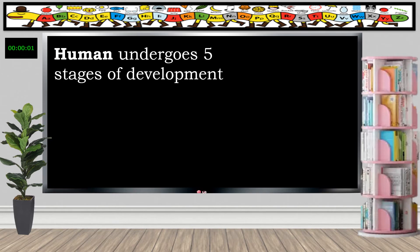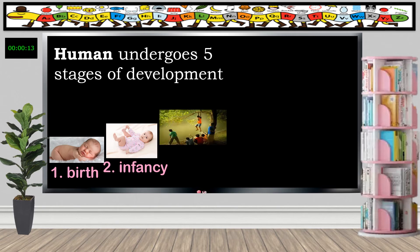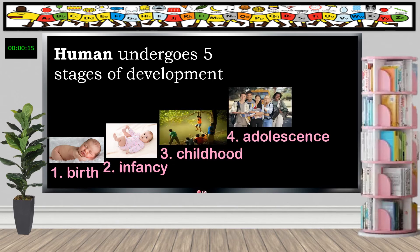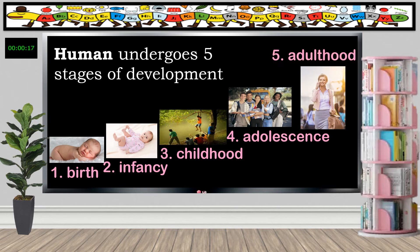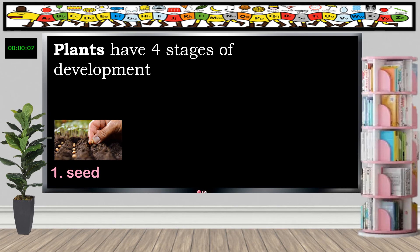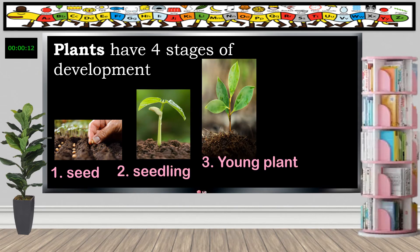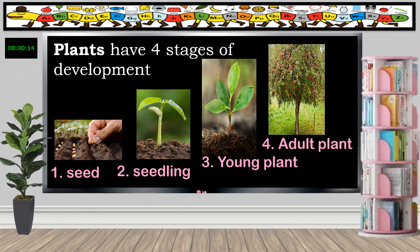Let's review. Humans undergo five stages of development: first birth, second infancy, then childhood, then adolescence, and finally adulthood. Plants have four stages of development: from seed, second is seedling, third is young plant, and the last one is adult plant.